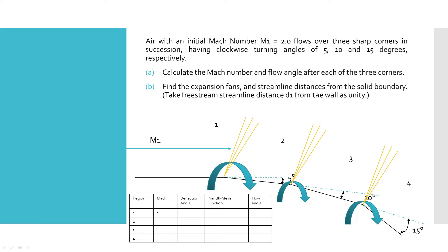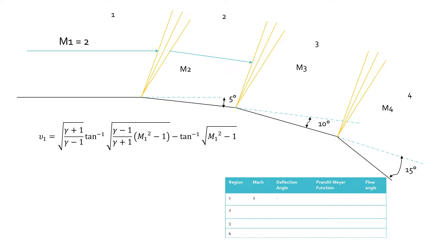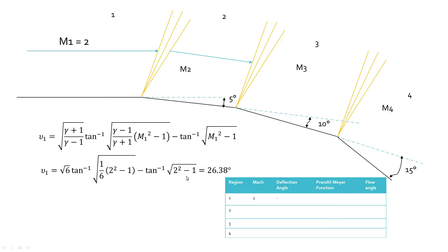Let us first consider the Prandtl-Mayer expansion equation. For a 2-mark gate or end-semester question, you can use this particular formula to find the Prandtl-Mayer expansion. Alternatively, you can refer to the gas table for isentropic flow. For the corresponding Mach number of 2, you can find the value of the Prandtl-Mayer expansion for region 1 and the Mach angle. Or substitute values into the formula to get the Prandtl-Mayer function for region 1.